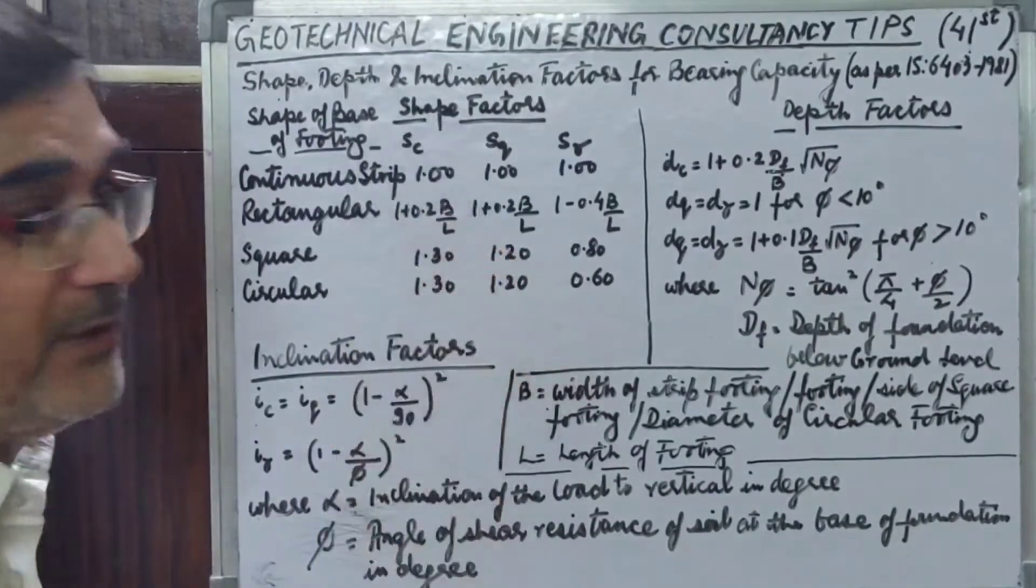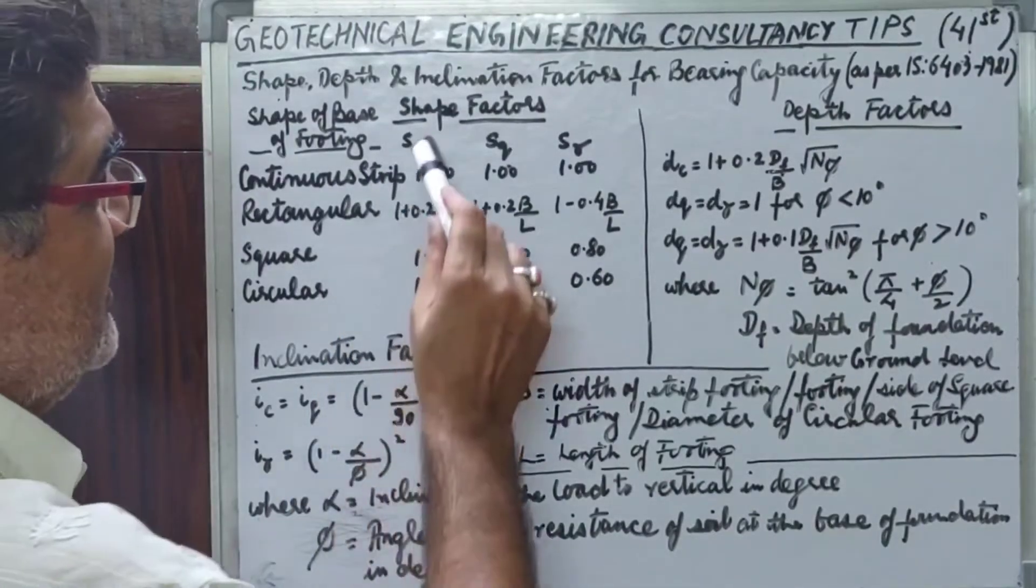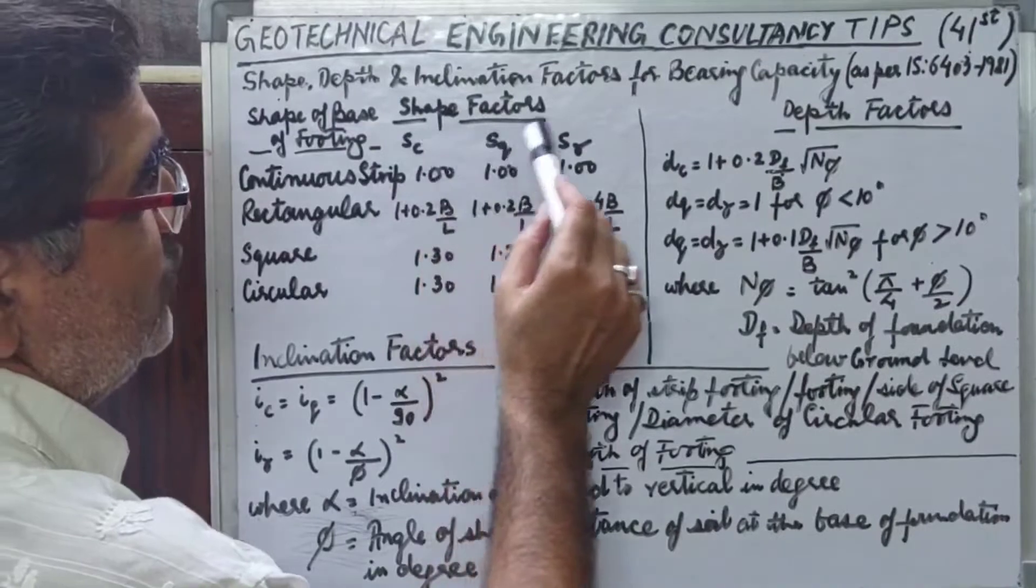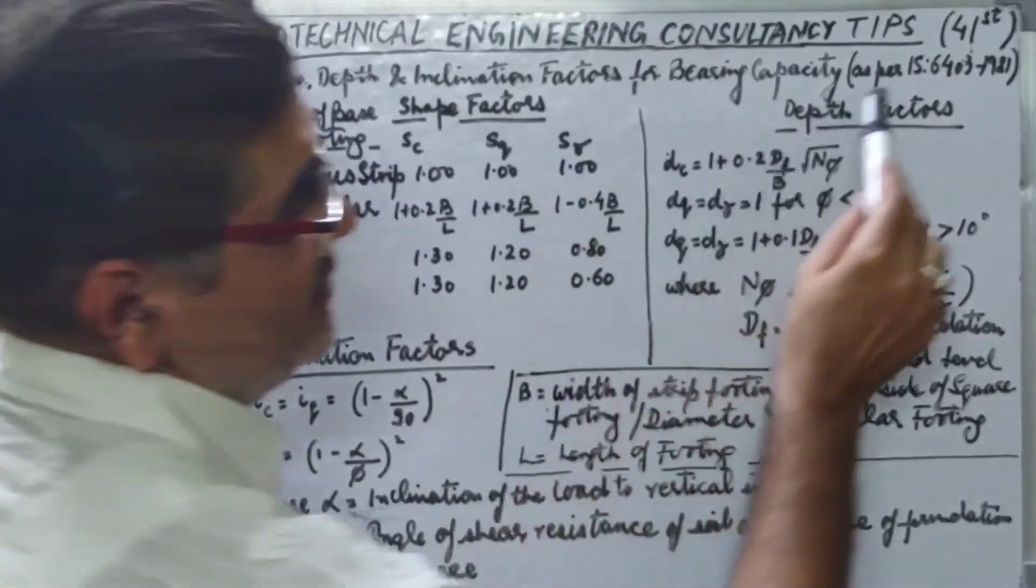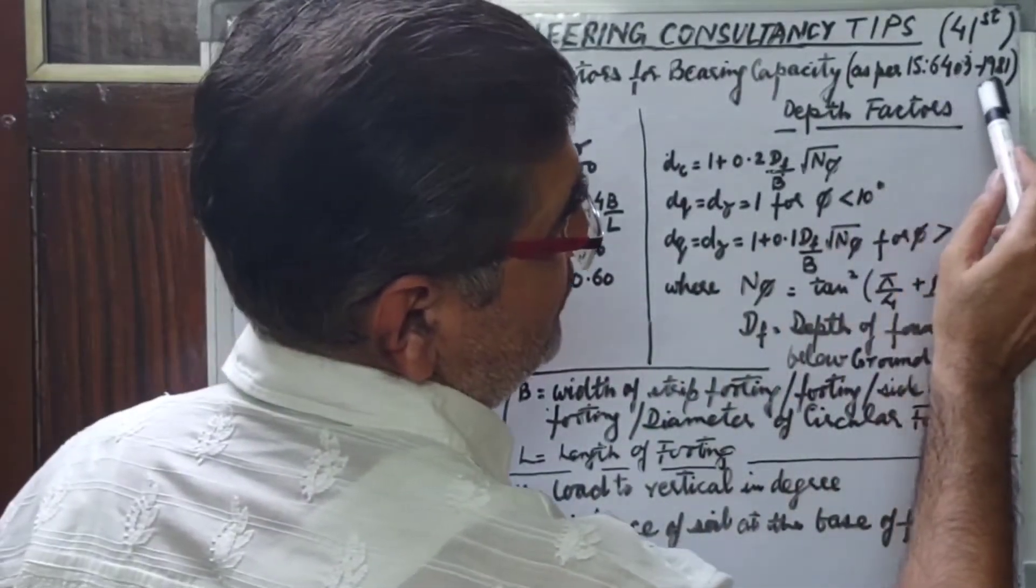Now the shape factors, there are three shape factors being defined as Sc, Sq, S gamma as per IS 6403, Indian Standard Code 6403, 1981.